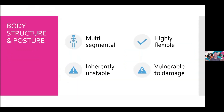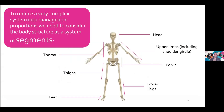As a very basic introduction to body structure and posture: our body structure is multi-segmental and highly flexible, which means we can adopt lots of different postures throughout the day depending on the task. But this does make it inherently unstable and vulnerable to damage. We need to consider the body structure as a system of segments — we still need to target all these body segments even in sitting, including the pelvis as the foundation and even the feet, through which we take 19% of our body weight in sitting.